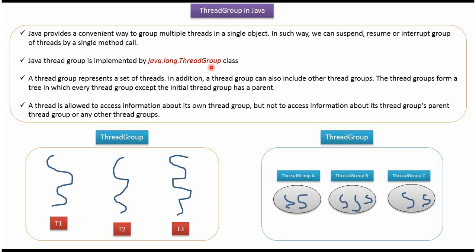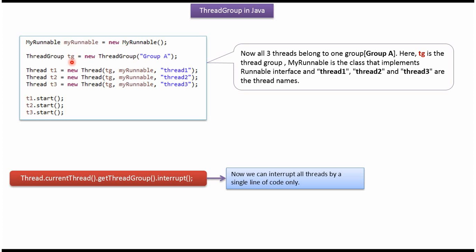ThreadGroup is implemented by the ThreadGroup class, which belongs to the java.lang package. Here I have created a ThreadGroup — the name of the ThreadGroup is Group A. I have created 3 threads and added them to the ThreadGroup, so this ThreadGroup contains 3 threads. Using a single line, we can interrupt all threads inside the ThreadGroup.